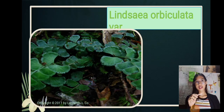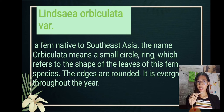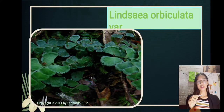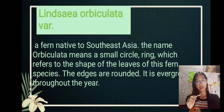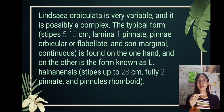This species is called Linsaea orbiculata. Linsaea orbiculata is a fern native to Southeast Asia. The name orbiculata means a small circle or ring, which refers to the shape of the leaves. The edges are rounded and it is evergreen throughout the year. Linsaea orbiculata is very variable and possibly a complex. The typical form has stipes 5 to 10 cm, lamina 1-pinnate, pinnae orbicular or flabellate, and sori marginal continuous. The other form, known as L. hynanensis, has stipes up to 28 cm, fully 2-pinnate, and pinnules rhomboid.